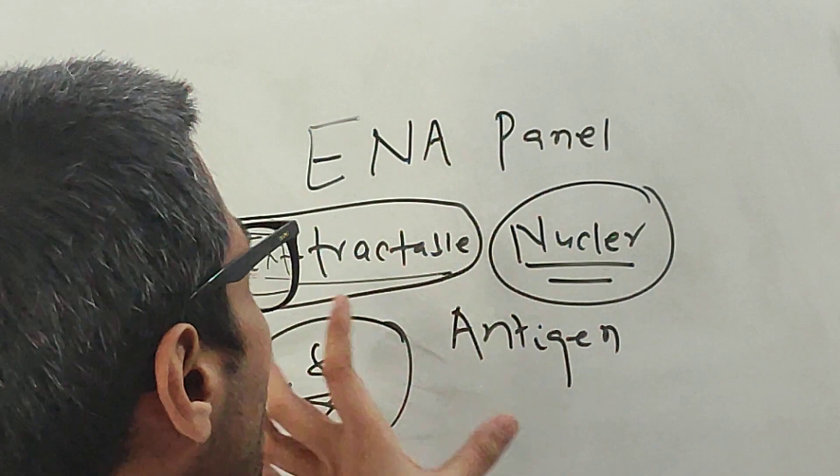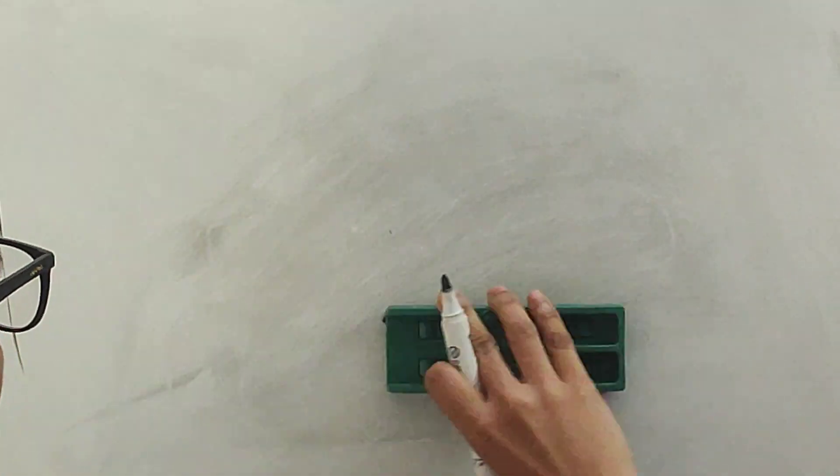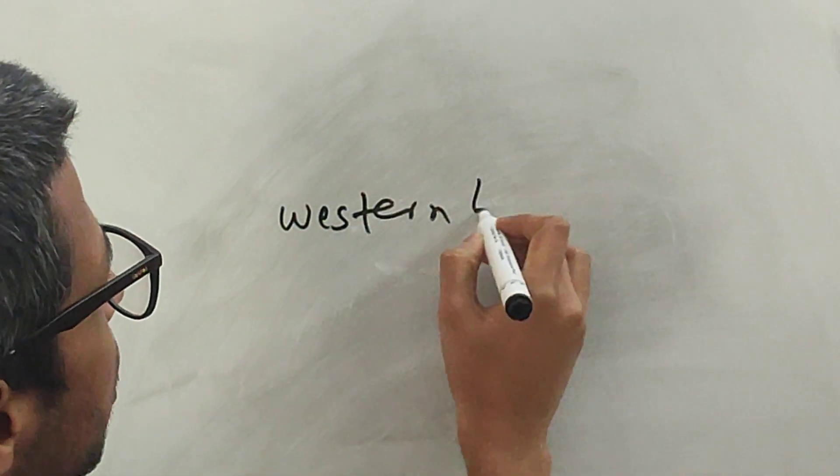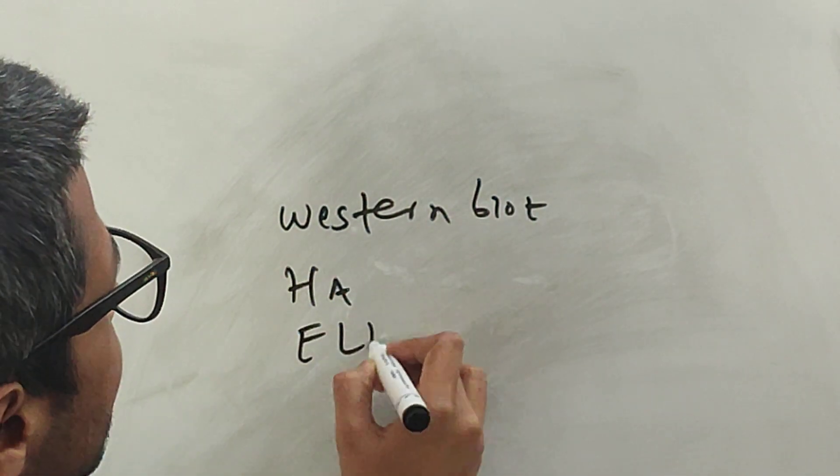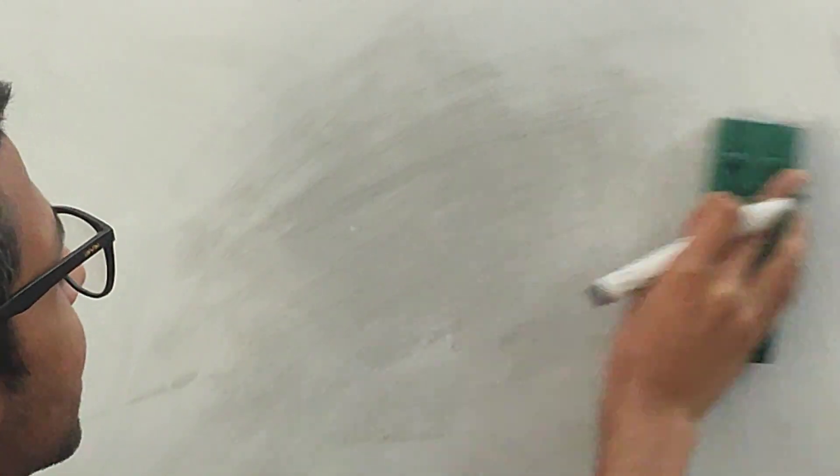So this is called extractable nuclear antigens. Nowadays we use other techniques like Western blot, hemagglutination, ELISA for the estimation of these antigens.